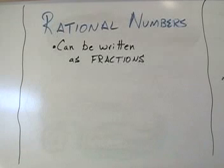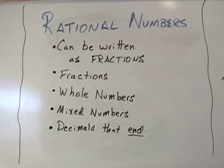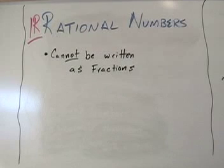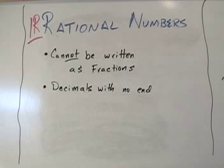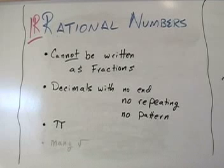So let's review what we know about rational numbers. Rational numbers can be written as fractions. Examples of rational numbers are fractions, whole numbers, mixed numbers, decimals that end, and decimals that have a pattern, and now irrational numbers. These are values that cannot be written as fractions. Some decimals are irrational numbers, decimals with no end, no repeating, and no pattern. Pi is an example of an irrational number, and many square roots are irrational.